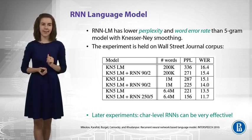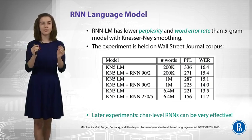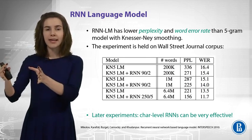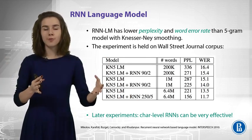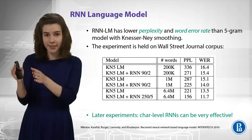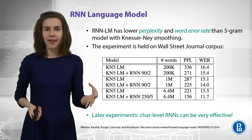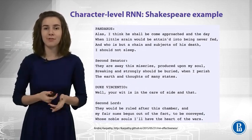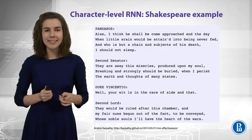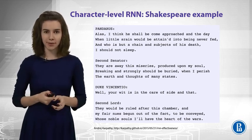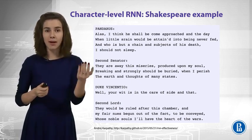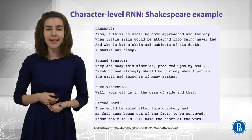One interesting thing is that we can apply RNNs not only at the word level, but even at the character level. Instead of producing the probability of the next word given five previous words, we produce the probability of the next character given five previous characters. This is the Shakespeare corpus that you have already seen, and you can see that this character-level recurrent neural network can remember some structure of the text — you have multiple turns in the dialogue. And this is awesome.